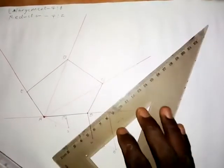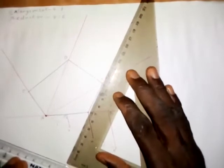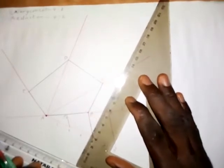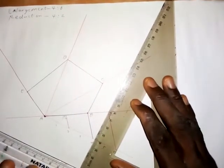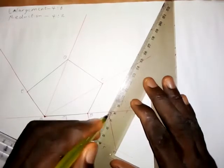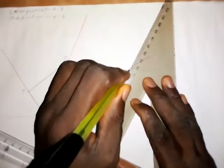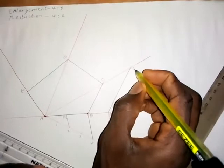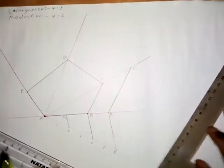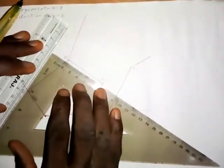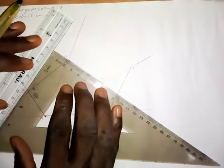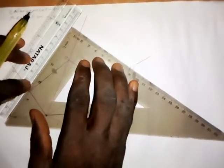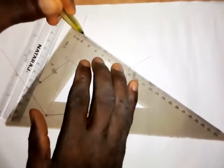Set your set square on line BC and support it with the ruler. Then shift the set square to point B1 and draw a line so it meets the radial line — this point is C1. Then set your set square on line CD, shift it to point C1, and draw a straight line to get point D1.